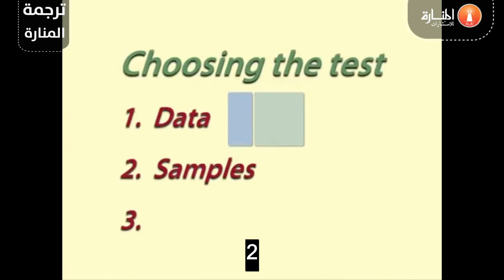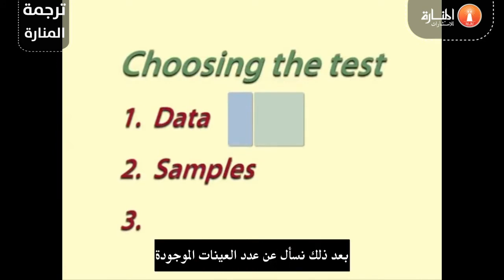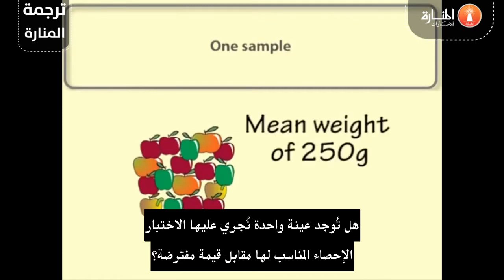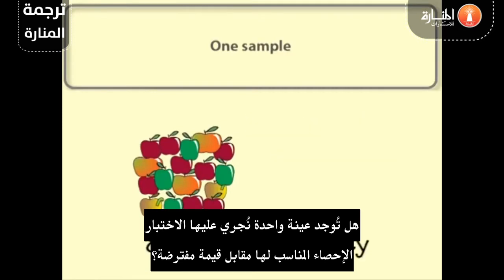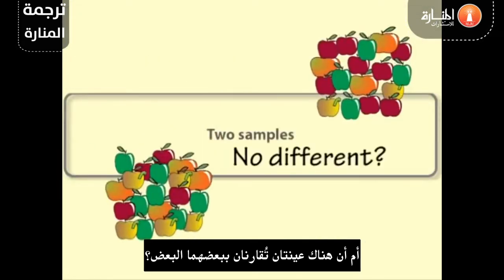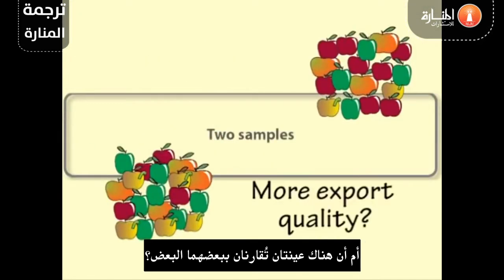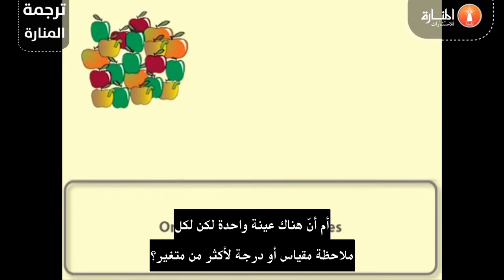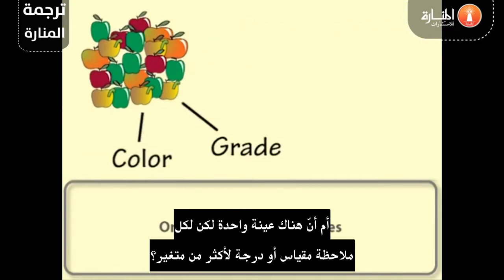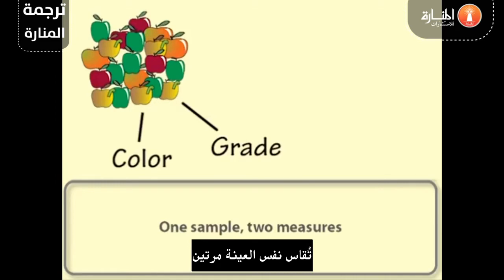2. Samples. Next, we ask how many samples are involved. Is there one sample, for which we are testing the relevant statistic against a hypothesized value? Or, are there two samples, which are being compared with each other? Or, is there one sample, but each observation has a measure or score for more than one variable — the same sample is measured twice.